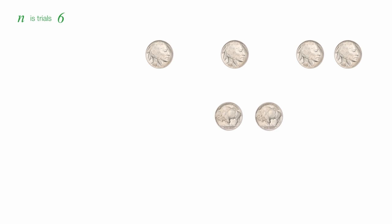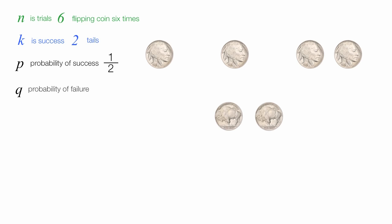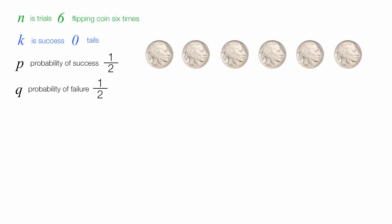Each flip of the coin is a trial, and that's going to be n. In this case, it's going to equal six. Success is tails and we're looking for exactly two tails. The probability of success is one-half, and the probability of failure is also one-half.